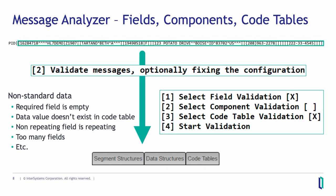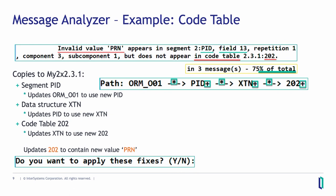You have three different options for what you want to check: field validation, the components and data structures, or the code tables — or you can run all three together. The result will look something like this: for example, in code table 202, there is a value missing from your data. The data contains the value PRN, which is not in this code table, and it found it in the PID segment in field 13.